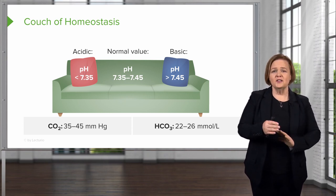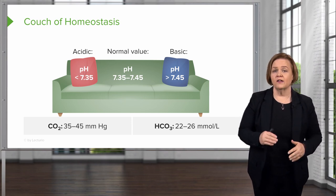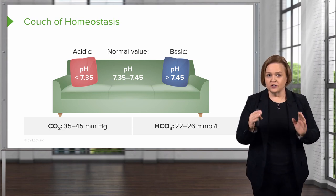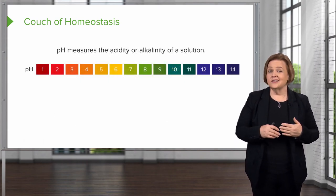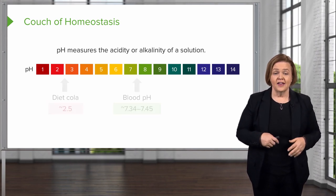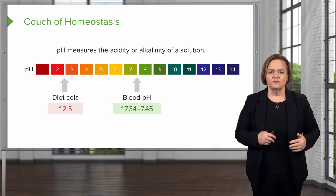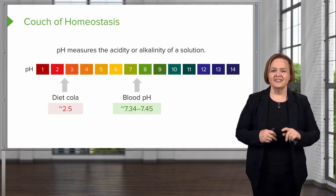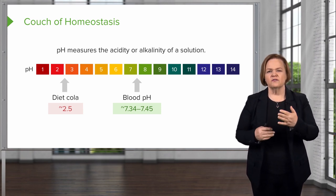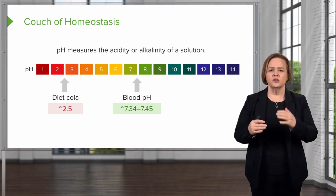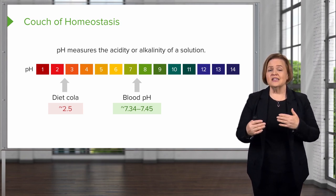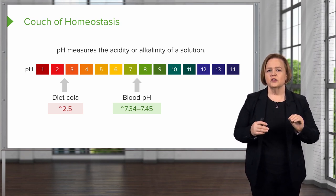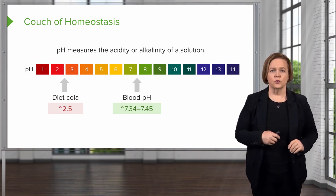We'll start pretty slow in the beginning to make sure you really have these concepts down well, then we'll pick up the pace toward the end. We're talking about the couch of homeostasis. That's the same pH you did in junior high science labs. The pH of Diet Coke is about 2.5. pH of blood is 7.35 to 7.45. Different labs will have different values, but we're going to stick with 7.35 to 7.45 as being normal.